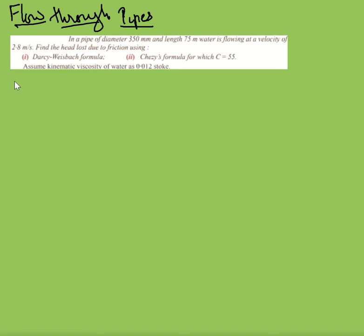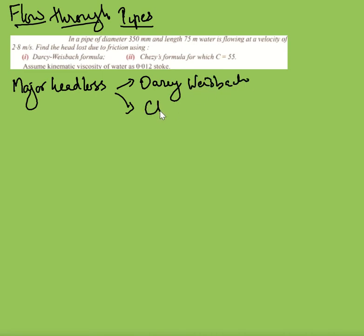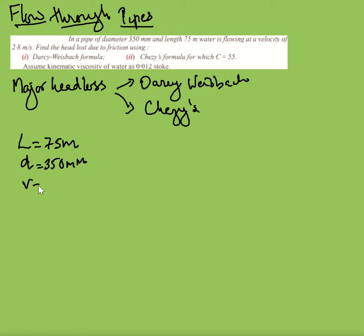This is a problem of major head loss where you can use two equations: one is Darcy's Weisbach equation and the other is Chezy's equation. The details given are: length of pipe L = 75 meters, diameter D = 350 mm, velocity V = 2.8 meters per second, and kinematic viscosity ν = 0.012 stokes.